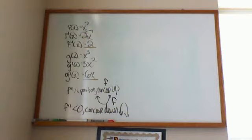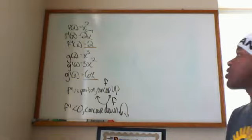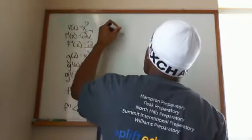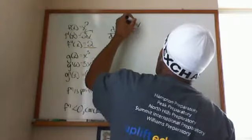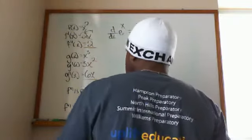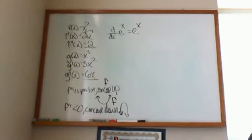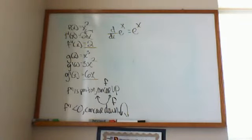Also, the derivative of e to the x is just e to the x. The derivative of e to the x equals e to the x. That's one of the easier derivatives. It doesn't have anything else but itself as a derivative.